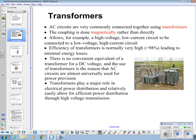Efficiency of transformers is normally very high, greater than 98%, leading to minimal energy losses. No convenient equivalent of a transformer for a DC voltage. There's no real comparison for the transformer for DC circuits, unless you do something with electronics to achieve it. Transformers play a major role in our electrical power distribution, relatively easily allow for efficient distribution through high voltage.